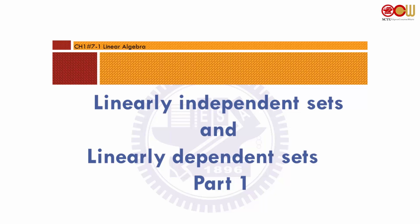In this section 1.7 we will be talking about linearly independent sets and linearly dependent sets. Remember at the end of section 1.6 we talked about sets — whenever a vector is a linear combination of the remaining vectors in the set, it can be removed without changing the span. Such a vector depends on other vectors.